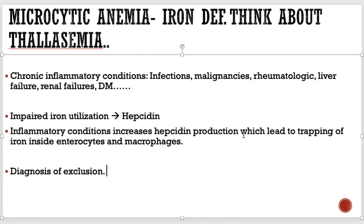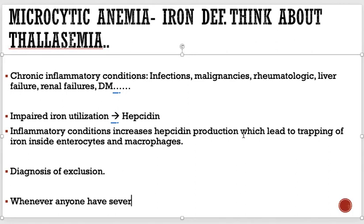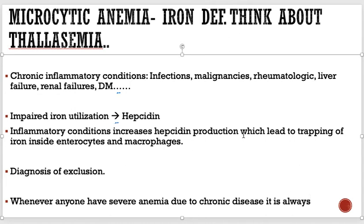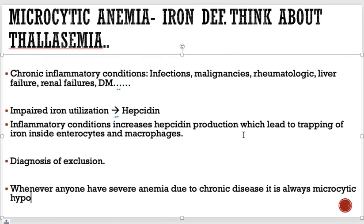When you take a history, the patient will have one of these conditions: infections, malignancies, diabetes, renal failure, liver failure, or similar. It is not always microcytic — it can be normocytic as well. In mild and sometimes moderate forms it remains normocytic, normochromic, but in severe forms of anemia of chronic disease, it is always microcytic hypochromic.